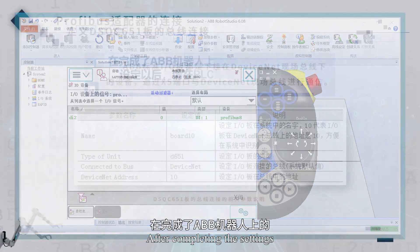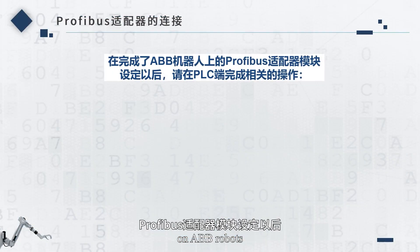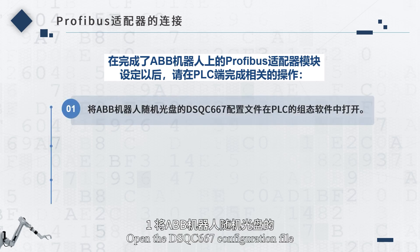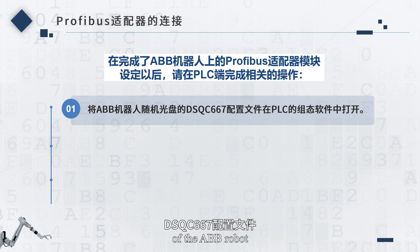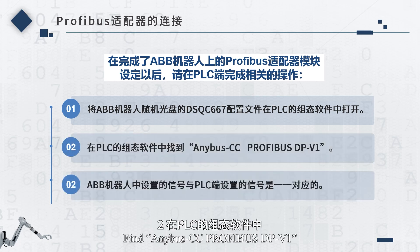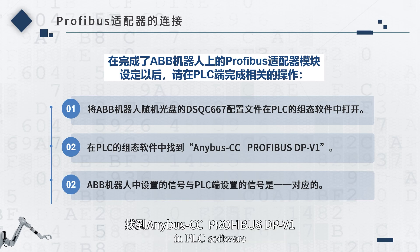After completing the setting on the ABB robot, please complete the relevant operations on the PLC. Open the DSQC667 configuration file of the ABB robot in the PLC software. Find Anybus CC PROFIBUS DP V1 in the PLC software.